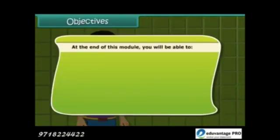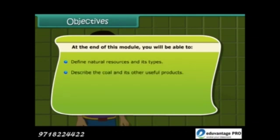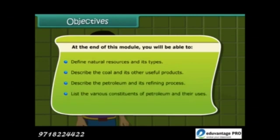At the end of this module, you will be able to: define natural resources and its types; describe coal and its other useful products; describe petroleum and its refining process; list the various constituents of petroleum and their uses; and describe natural gas and its importance.